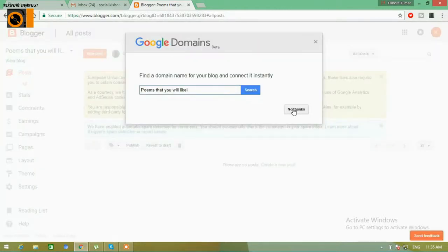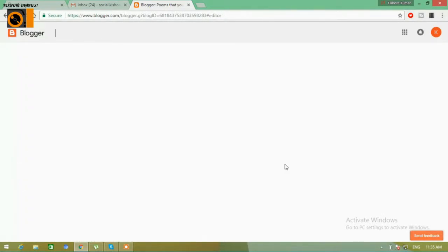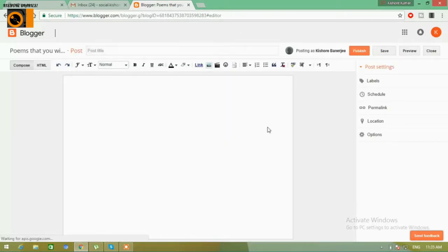That is how our Blogspot homepage will look like. We can see 'Create New Post' and click on it. It's loading. This is the post section. We get the title and the body section where we can write our creations. So this is how Blogspot is normally done and the Blogger account is created.